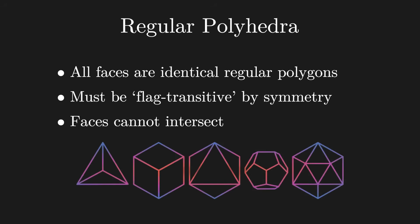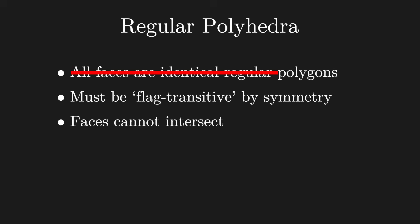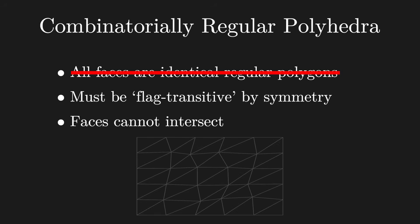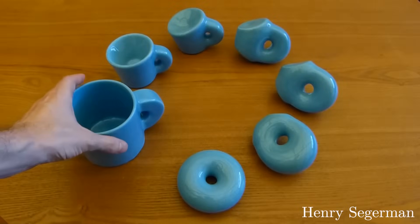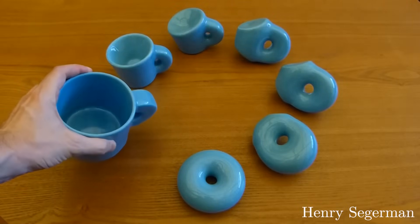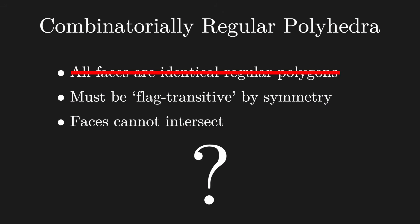But what if we were to relax the first constraint? These would be polyhedra that are combinatorially regular, meaning every face is indistinguishable given only a map of how everything is connected. Similar to the way a topologist wouldn't be able to tell the difference between a donut and a coffee cup. Are there more polyhedra like this that exist? The answer is yes.